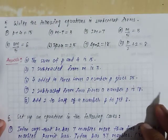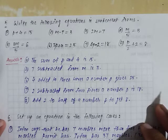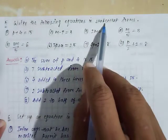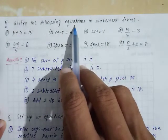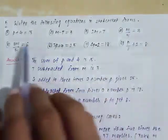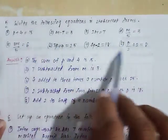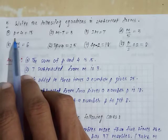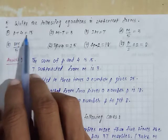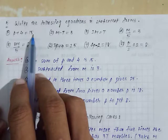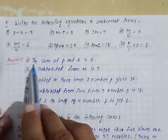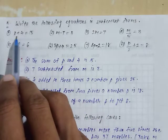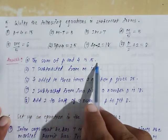Come to question number 5. Write the following equations in statement forms. In question number 4 we were given statement forms and we had to convert them to equations. Here you are given equations and you have to convert to statement form. In the first one, p plus 4 is equal to 15. How can we write it? The sum of p and 4 is 15. Plus means sum.